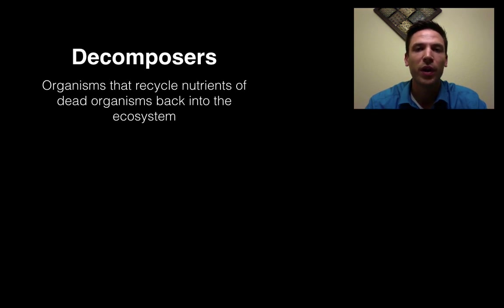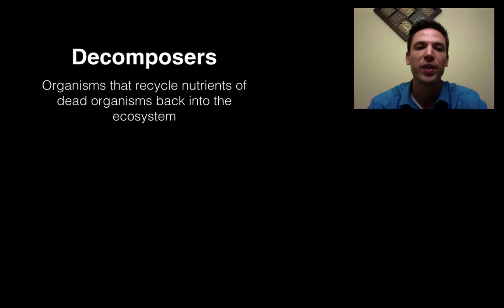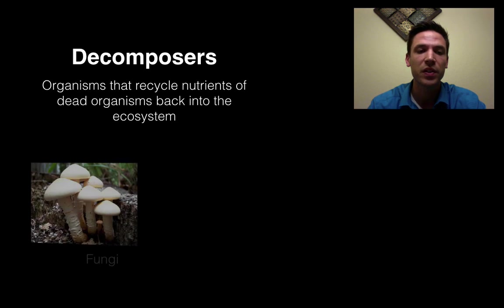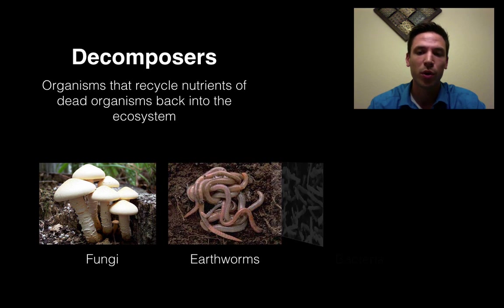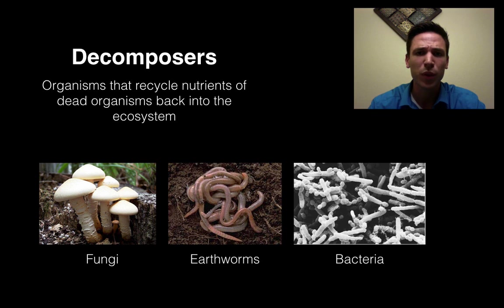One last group of organisms worth mentioning are our decomposers. They don't have one specific place in our food web or food chain — they are organisms that recycle nutrients of dead organisms back into the ecosystem. They pretty much eat everything once it's dead. They are essential: things like fungi, earthworms, bacteria — really any organism that helps decay dead organisms. They are crucial because they play a role in our biogeochemical cycles to return locked-up nutrients back to the ecosystem.